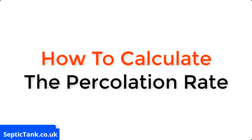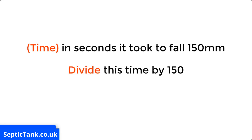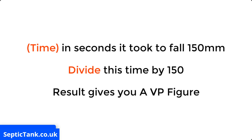So how do you calculate the percolation rate? It's really easy. You take the time it took in seconds for the water to fall 150mm, then you just divide this time by 150, and this result will give you a Vp figure.